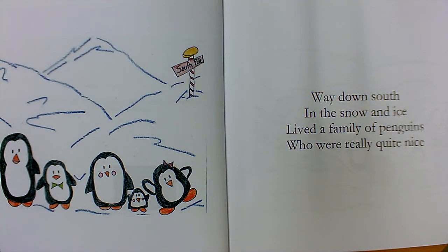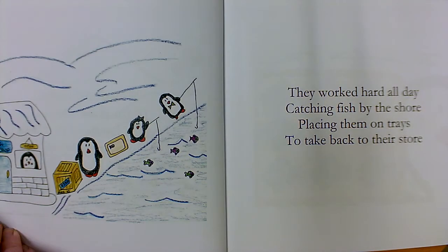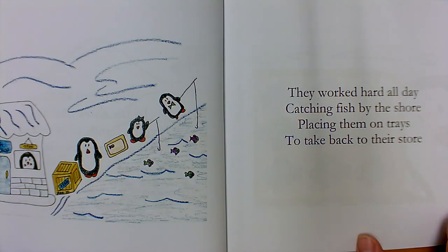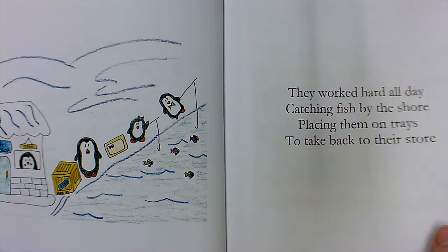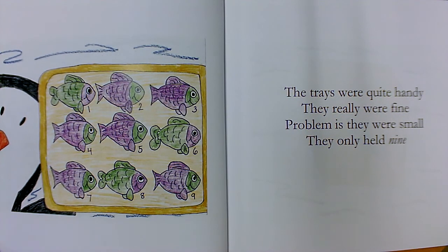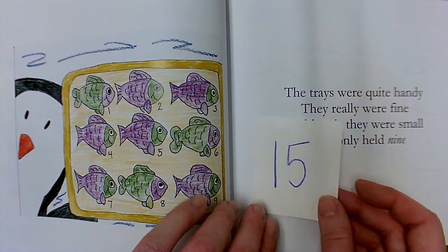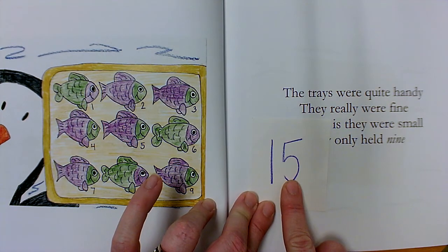Way down south in the snow and ice lived a family of penguins who were really quite nice. They worked hard all day catching fish by the shore, placing them on trays to take back to their store. The trays were quite handy. They really were fine. Problem is, they were small. They only held nine. Just like in the ones place of a number, it only holds nine.